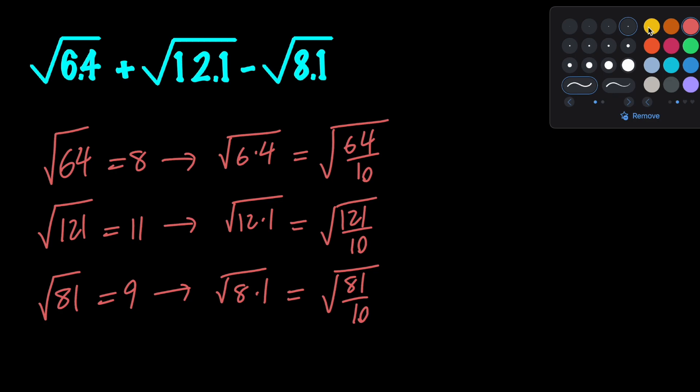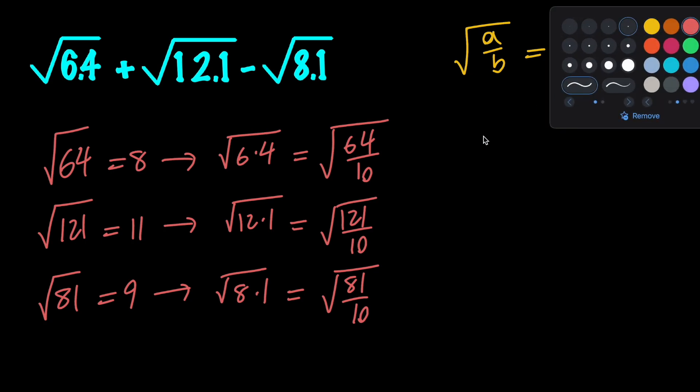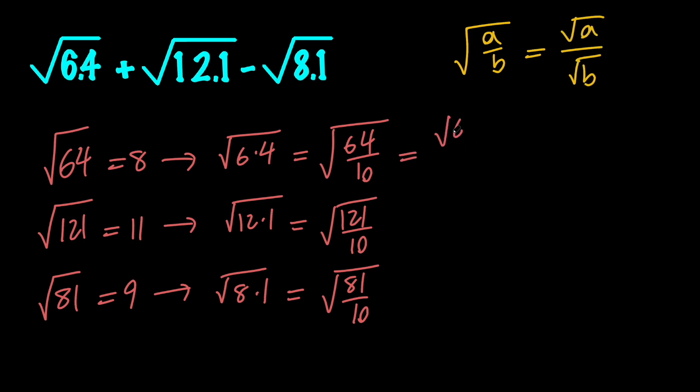Now notice that we all know that the square root of a divided by b is the same thing as the square root of a divided by the square root of b if and only if a and b are positive. So this means that this is equal to the square root of 64 divided by the square root of 10. This is equal to the square root of 121 divided by the square root of 10, and this is equal to the square root of 81 divided by the square root of 10.